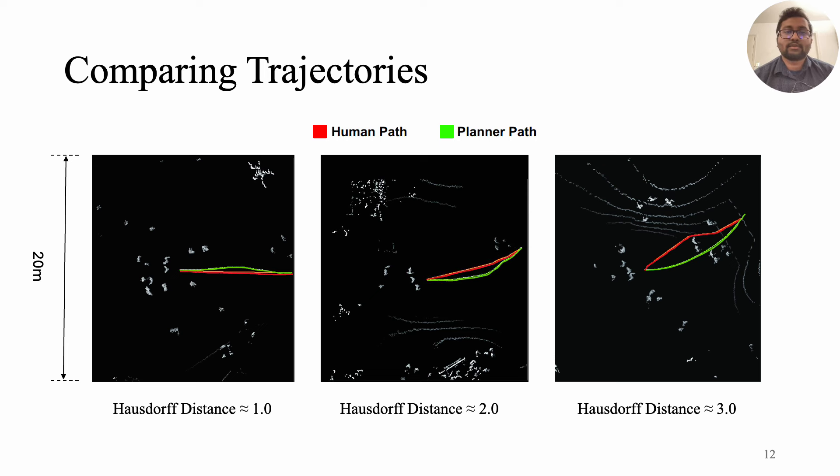In bird's eye view, where white dots represent obstacles, the trajectories are almost similar and align with each other if the distance between them is less than one. The trajectories move apart as the distance reaches two units and with three unit distance or more, they are far away from each other.